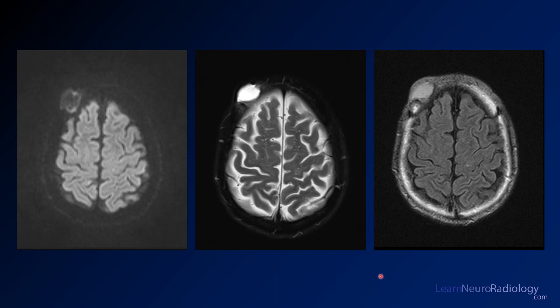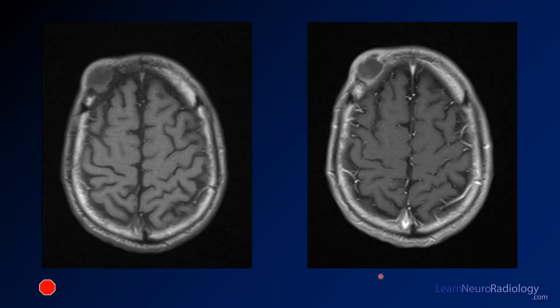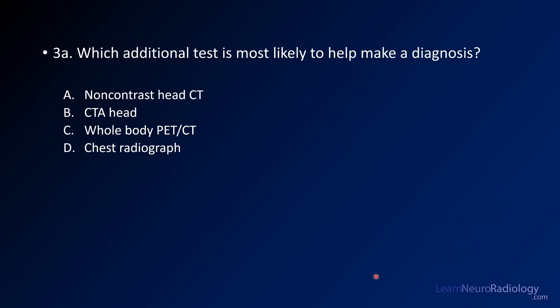I'm going to use this to drill down to see if you can find the abnormality. These are pre and post contrast images, so take a look at that same abnormality. The question here is: which additional test is most likely to help you make a diagnosis? Do you want a non-contrast head CT, CT angiogram, a whole body PET-CT, or chest radiograph?